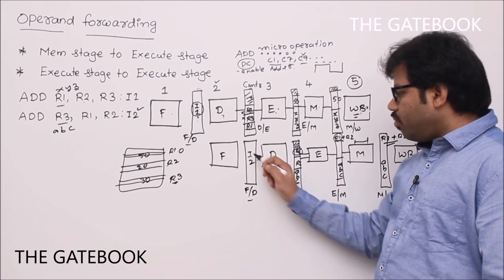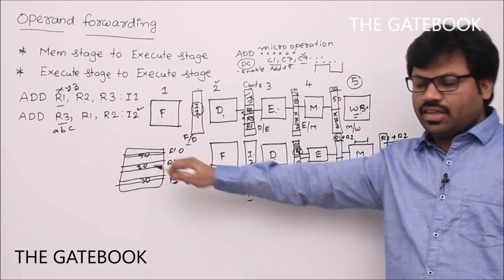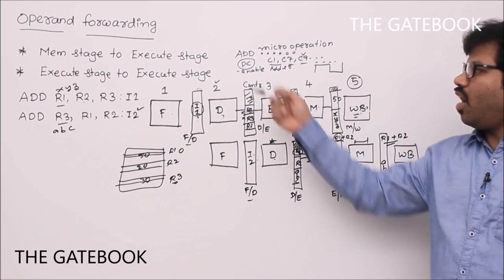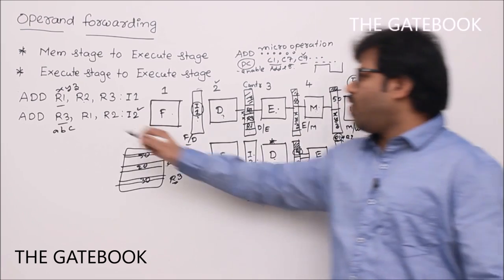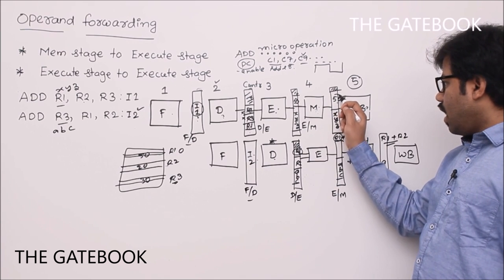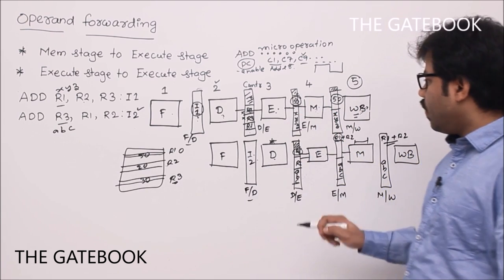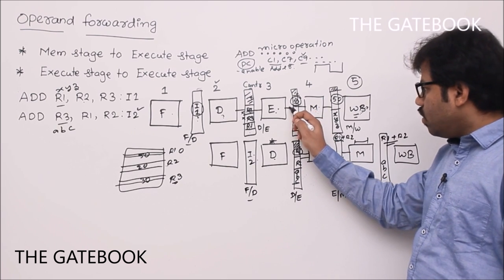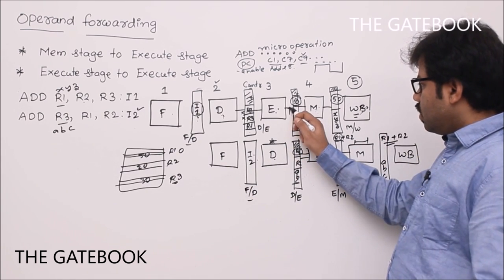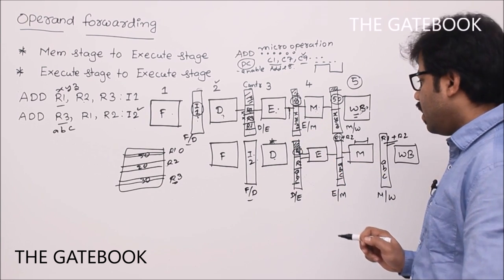The decode stage reads the old data from the register file, so we need operand forwarding to avoid the wrong result. The fresh data of R1 is available after the execution stage of instruction 1 — value 50 is present in the execute-memory buffer. We need to connect that buffer output forward so that instruction 2's execution stage receives the correct value of R1.